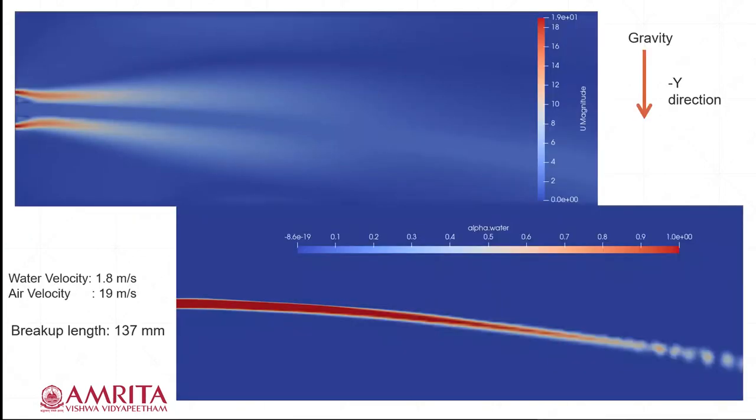These contour plots for velocity of water and air is 1.8 and 19 m/s respectively. For the velocity plot, the velocity variation of the fluids can be visualized. Because of the air interaction on the water, the velocity of water is gradually reducing. The below contour plot tells the breakup length of the spray, and the breakup length is 137mm.